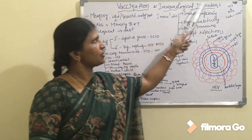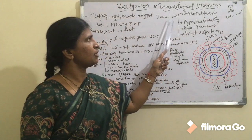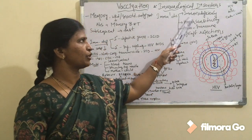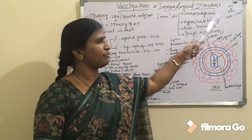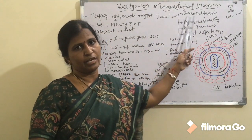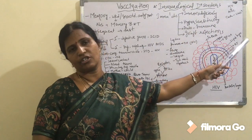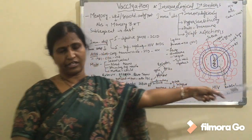Coming to the immunological disorders, they can be classified into four types: immunodeficiency disorders, hypersensitivity disorders, autoimmune disorders, and graft rejections.